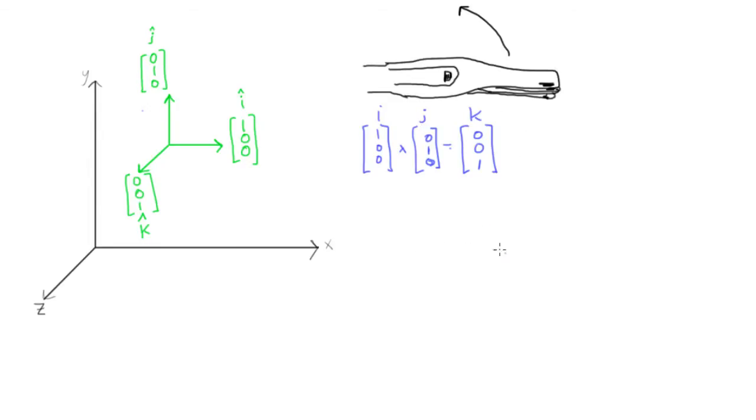Now the way that we can remember this really fast is you just write I, J, K twice. So write I, J, K. Just do this at the top of your test or something, or on a piece of paper that you have. I, J, K.